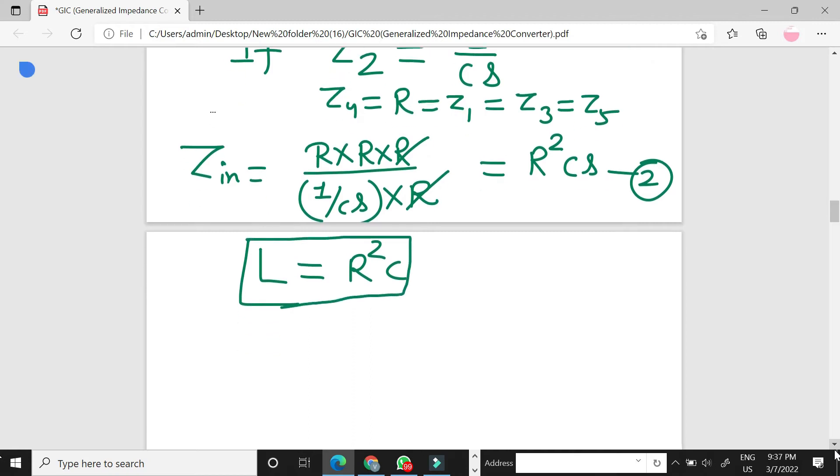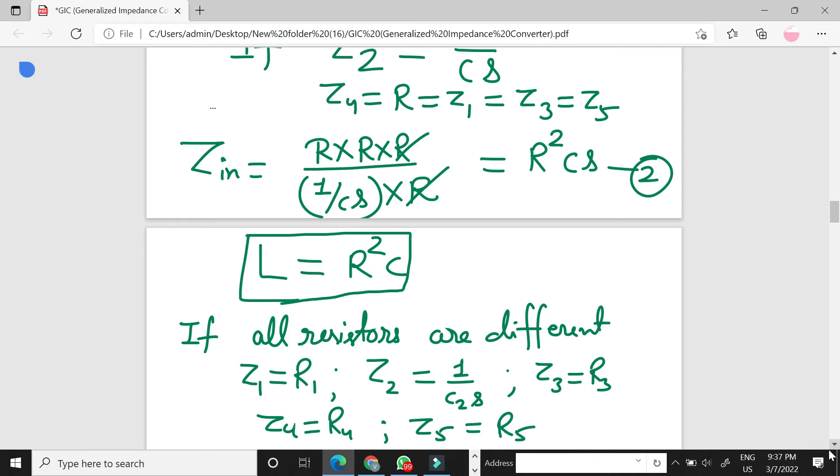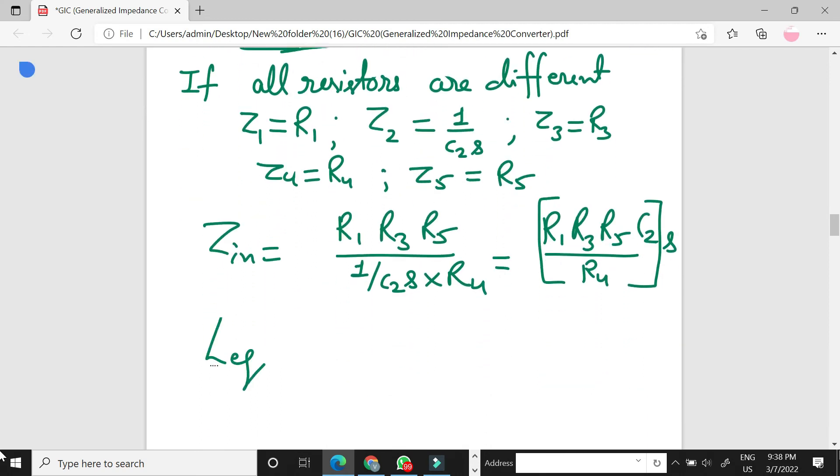If all resistors are different, that is Z1 R1, Z2 is 1 by C2S, Z3 R3, Z4 R4, Z5 R5, then inductance is R1 R3 R5 upon 1 upon C2S into R4. Then it is equal to R1 R3 R5 C2 upon R4 into S. So the value of inductance in this case is R1 R3 R5 C2 upon R4.